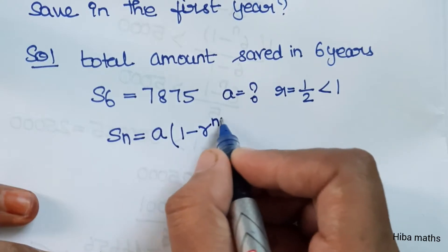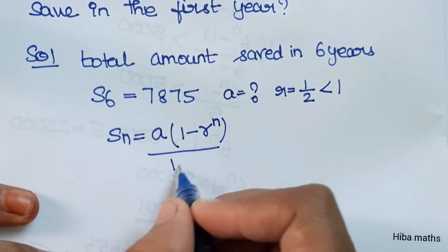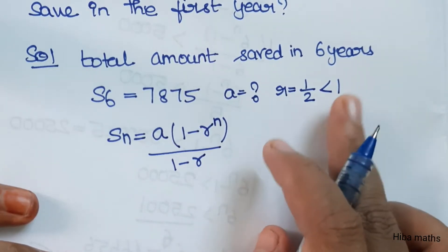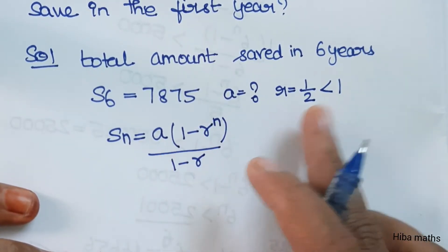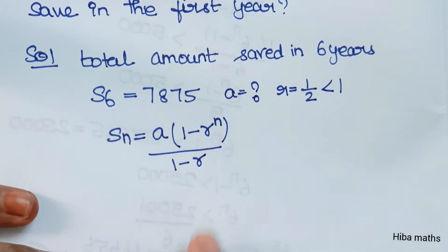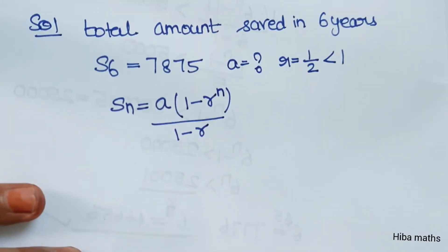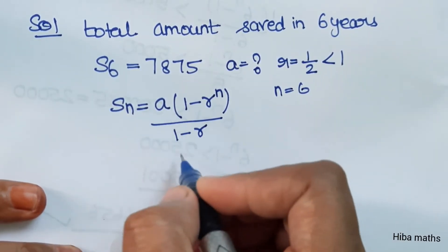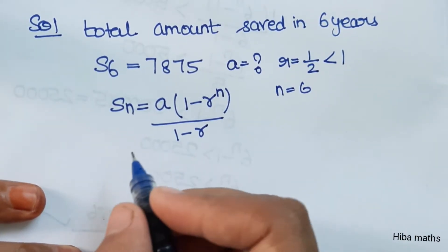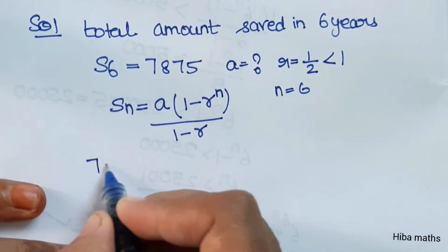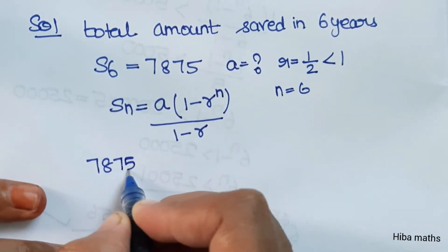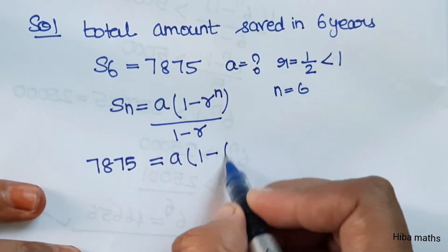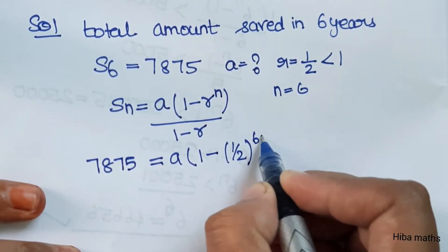Since r is less than 1, we use the formula S_n = a × (1 - r^n) divided by (1 - r). The condition here is r less than 1, so the formula becomes a × (1 - (1/2)^6) divided by (1 - 1/2).